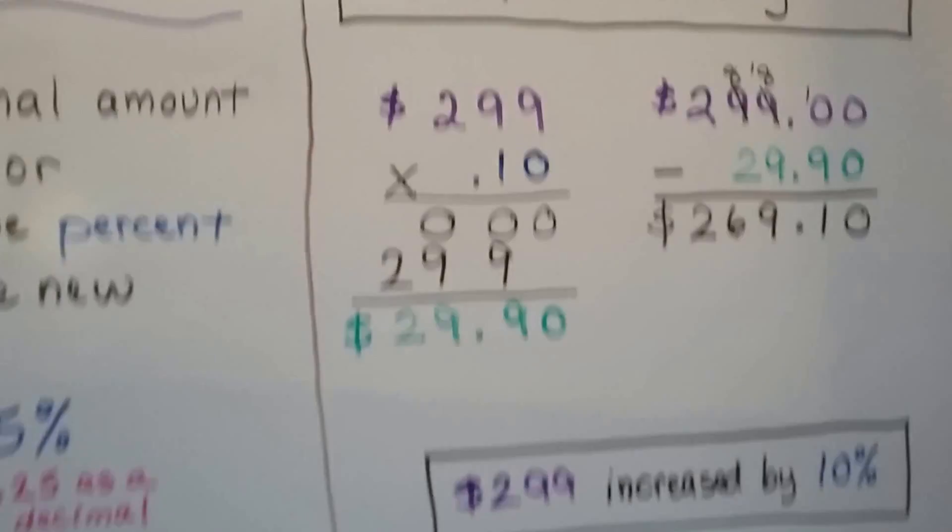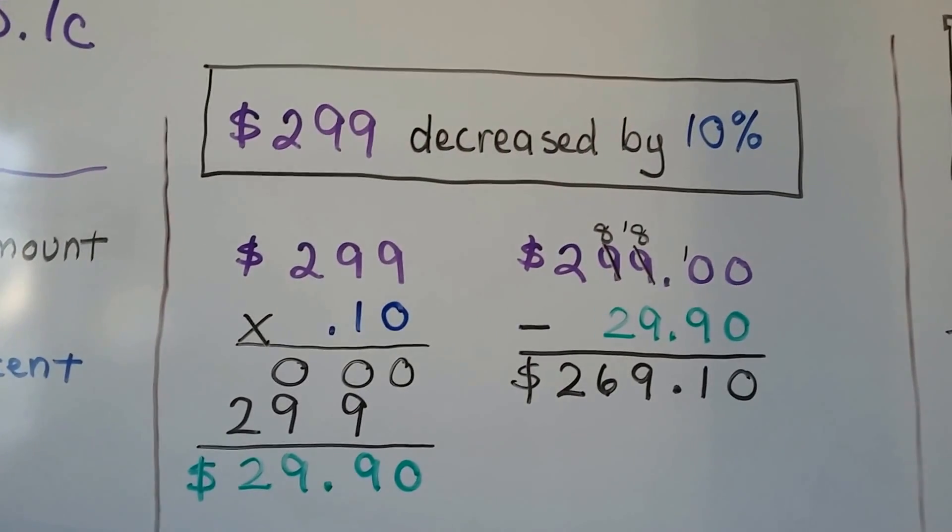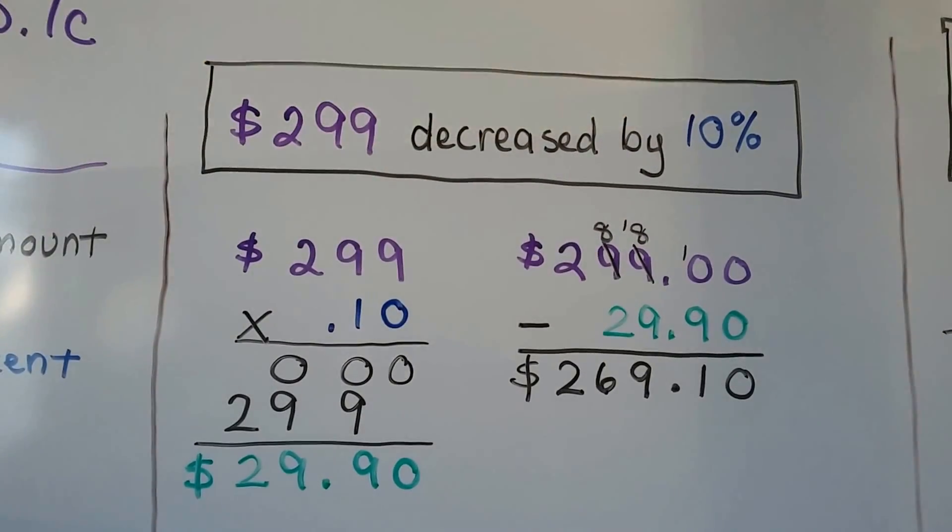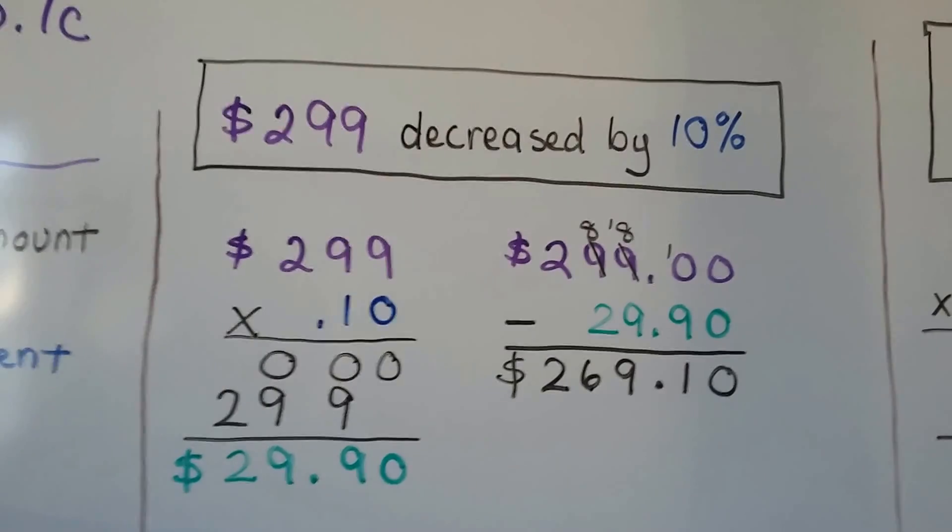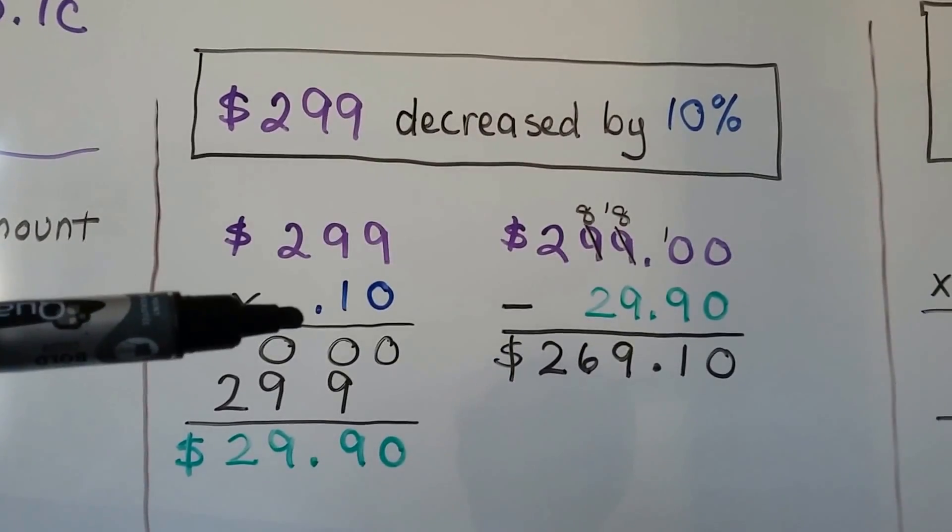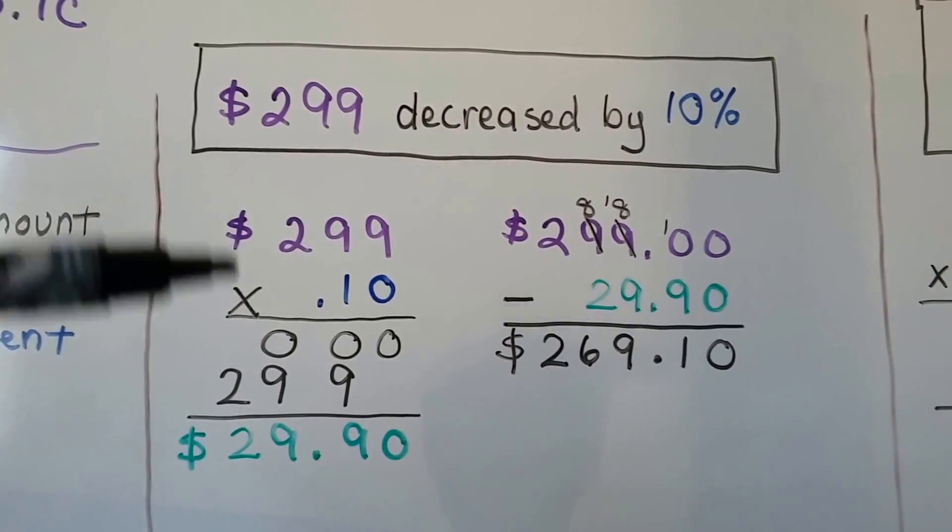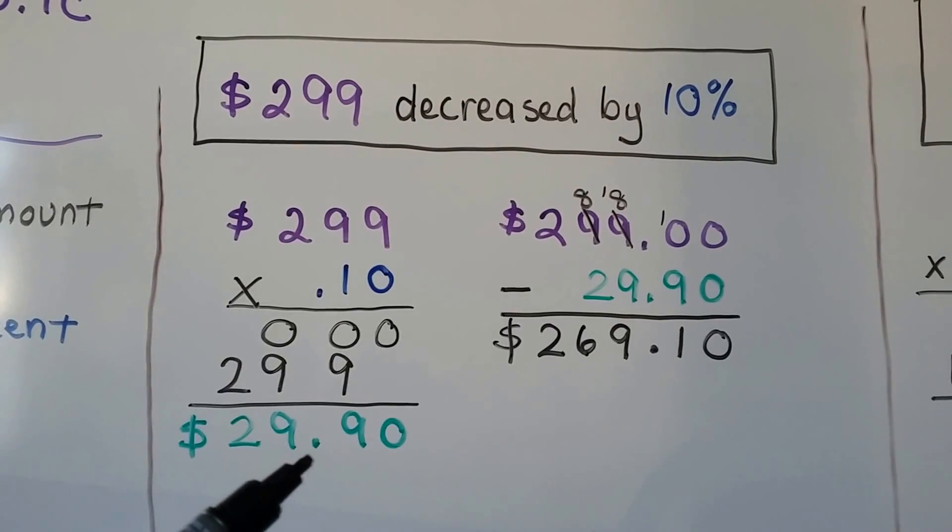Let's try a decrease. $299 decreased by 10 percent. So if we had a $299 coat that was on sale for 10 percent off, we would do $299 times .10. That would be the 10 percent. When we multiply it, we get $29.90.